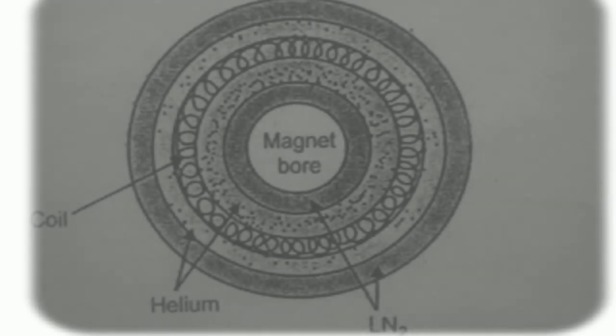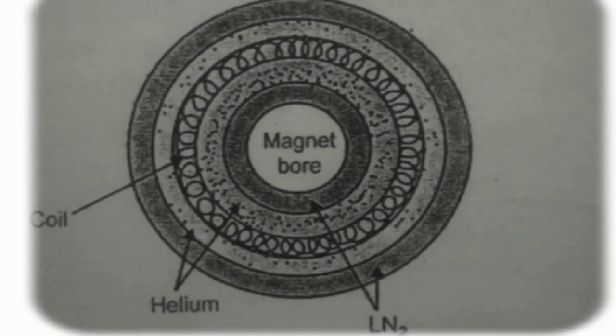Now see the diagram of the superconducting magnet. In the center there is a magnet bore, then liquid nitrogen, then helium in liquid form, then the coiling of the superconducting wire, then again helium, and then liquid nitrogen. This combination is to reduce heating and leakage.